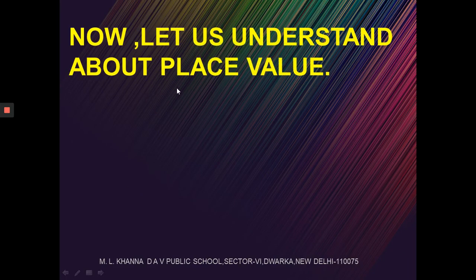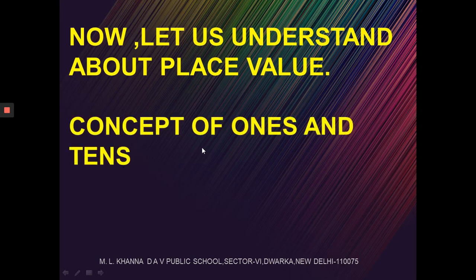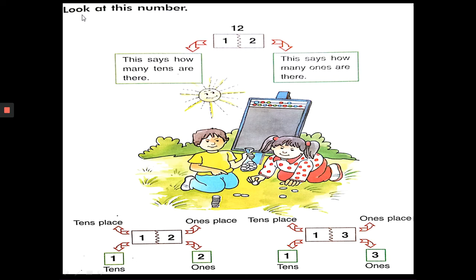Now let us understand about place value — the concept of 1's and 10's. Dear students, you can see the number 12. The number 1 in 12 tells us how many 10's are there, and the number 2 says how many 1's are there. So 1 is in the 10's place and 2 is in the 1's place — 1 ten and 2 ones. Similarly, if you take 13, 1 means there is 1 ten and 3 means there are 3 ones.